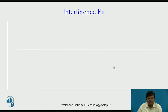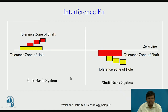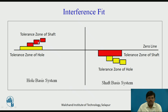Let us compare the shaft base system and the hole base system side by side. The left-hand side shows the hole basis system and the right-hand side shows the shaft basis system. In the hole basis system, the size of the hole is fixed and the tolerance zone of the hole is kept constant, while the size of the shaft is varied — as seen by the three red blocks at different positions.